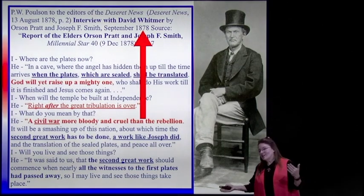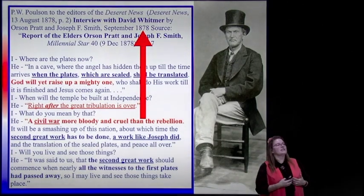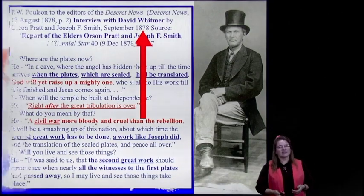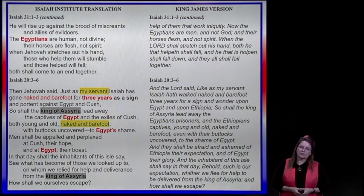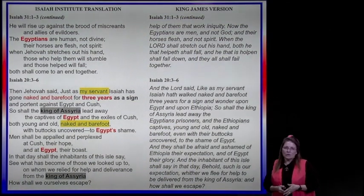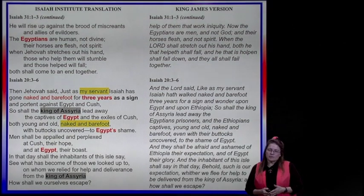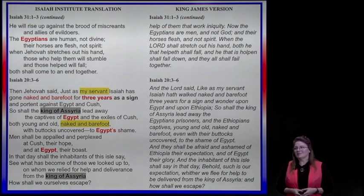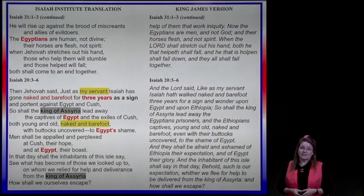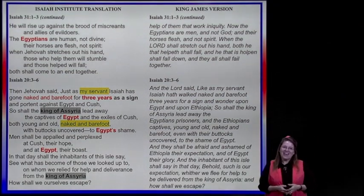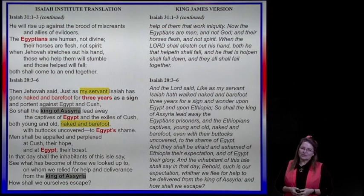We wouldn't call that doctrine, but it's fascinating that David Whitmer was taught and believed these things about the coming forth of the sealed plates. Let's compare this to Isaiah: 'He will rise up against the brood of miscreants and the allies of evildoers. The Egyptians are human, not divine. Their horses are flesh, not spirit. When Jehovah stretches out his hand, all of those helped will fall. Both shall come to an end together.'